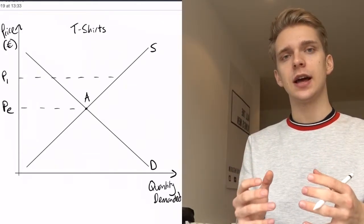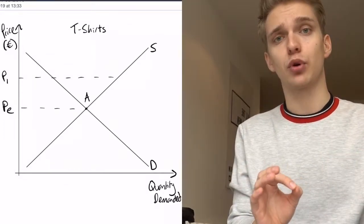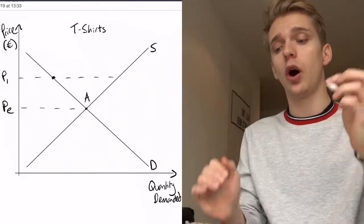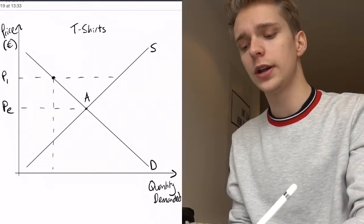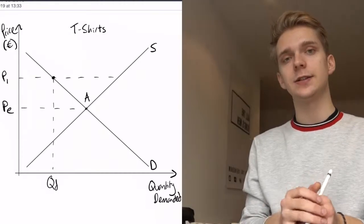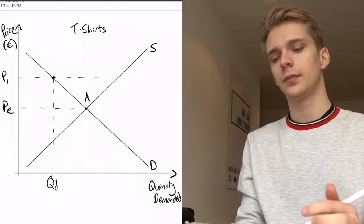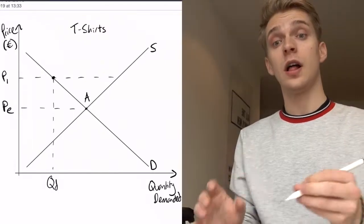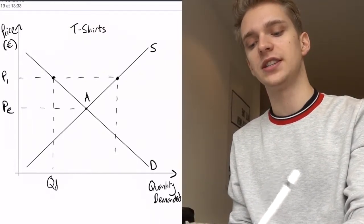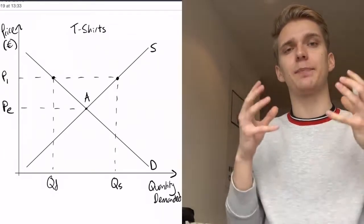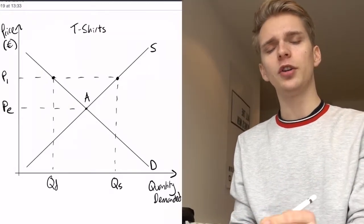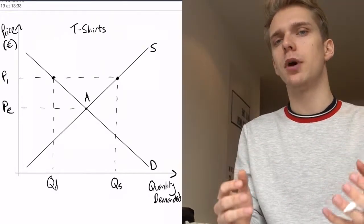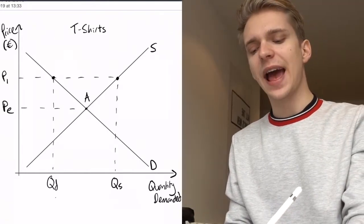What can you notice about this situation? Well, at that price, how many t-shirts are demanded? Let's look at where that price falls on the demand curve. At that high price P1, this is the level of quantity demanded — we'll call it QD. That's how many t-shirts are going to be bought. How many t-shirts are produced at this high price P1? That's all the way over here — we'll call that QS for quantity supplied. So at the price of P1, the quantity supplied is much larger than the quantity demanded. The amount of t-shirts produced is much higher than the amount of t-shirts sold. We call this excess supply.